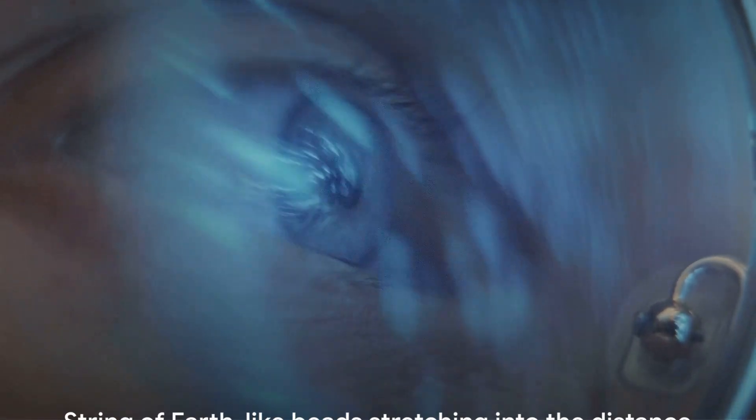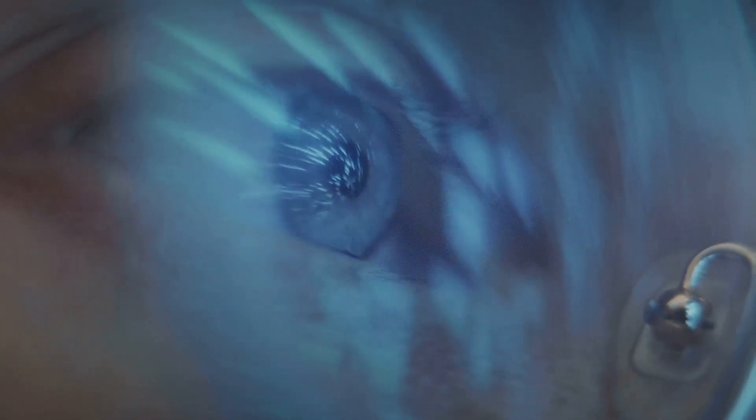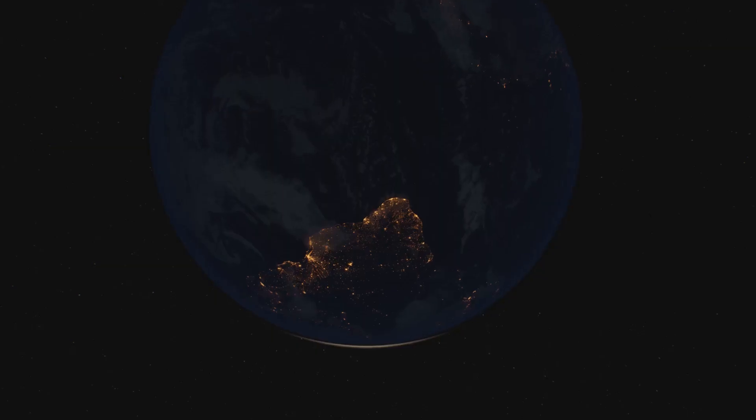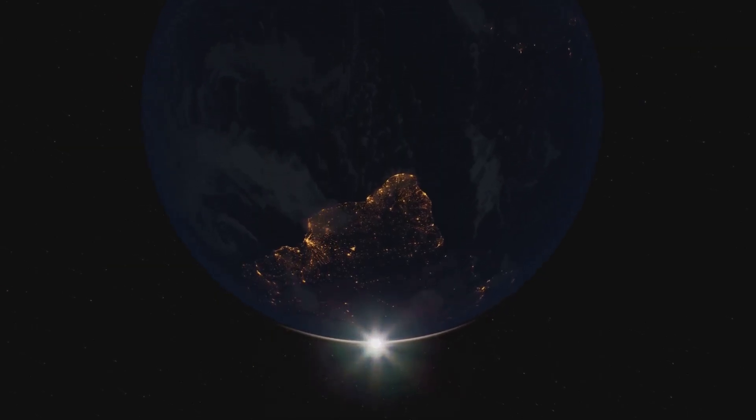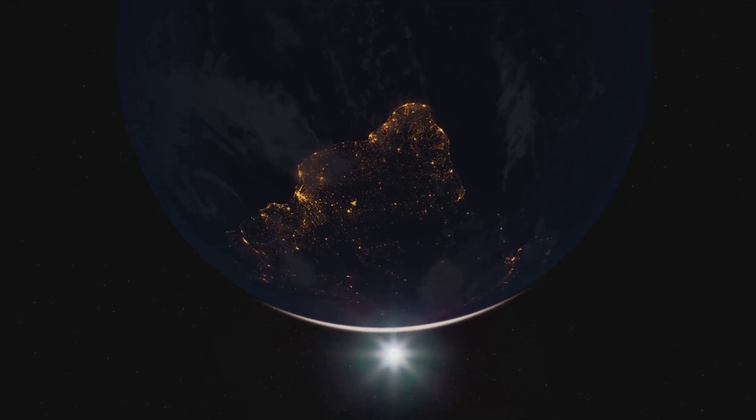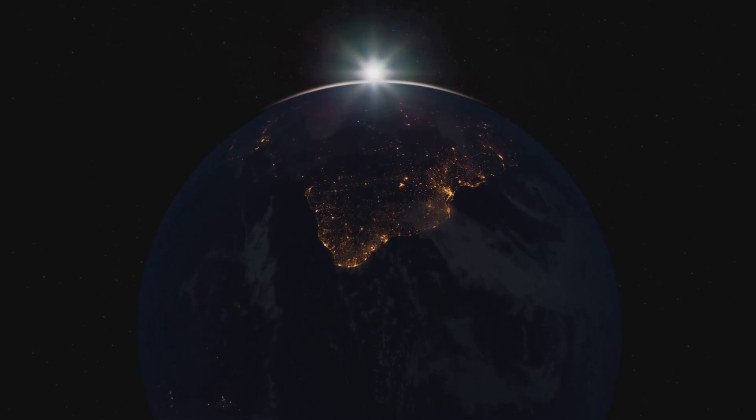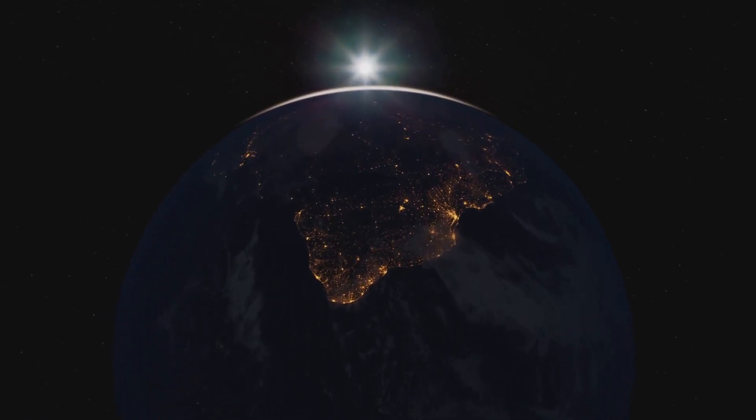To truly grasp this, imagine a string of over 23 Earth-like beads, and that's the path light takes in one second. It's a humbling comparison, isn't it? This comparison not only highlights the enormity of the speed of light, but also underscores how small our Earth is in the grand scheme of the cosmos. And remember, this is just how far light travels in a single second. When you consider that there are over 31 million seconds in a year, it's hard not to be awed by the sheer scale of the universe. So every time you switch on a light, remember that in just one second, that light could have traveled across more than 23 Earths. It's a reminder of the incredible scale of the universe we inhabit, and the phenomenal speed at which light travels.